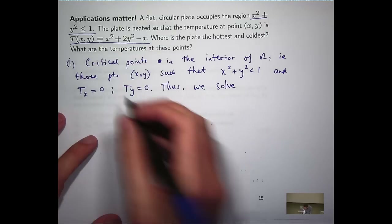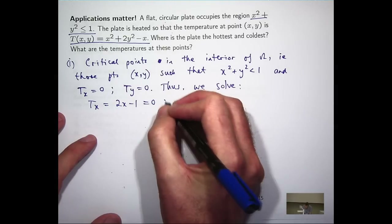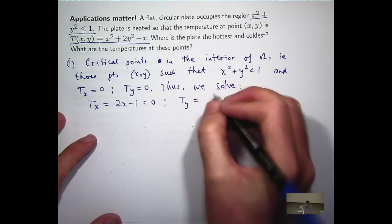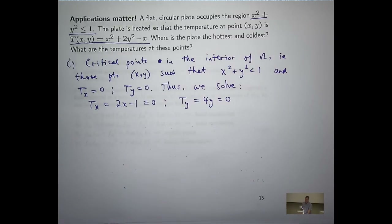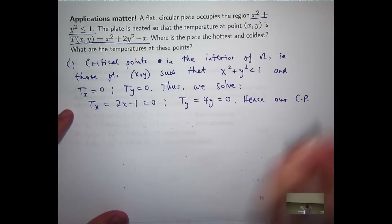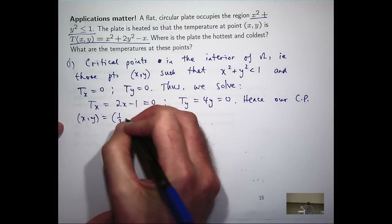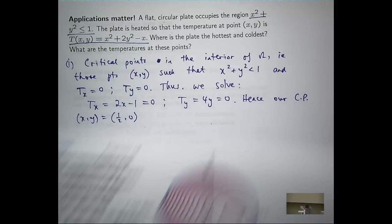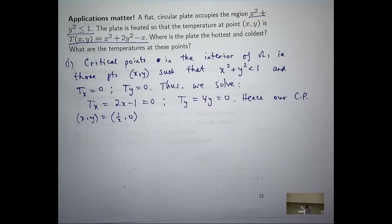So T sub x — that means dT/dx — is going to be 2x minus 1, set equal to zero. And T sub y — dT/dy — is going to be 4y equals zero. So these are easy equations to solve. Obviously y is going to be zero and x is going to be positive one half. So our critical point is just (1/2, 0). That looks like about right — it confirms what we were speculating about before.